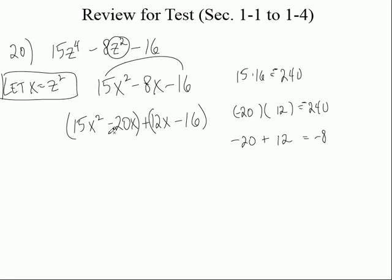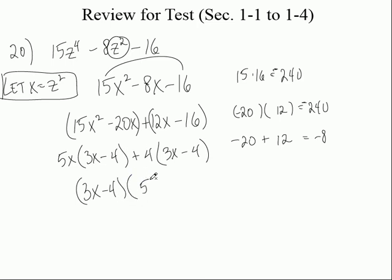Now let's factor this. What goes into both of those? It's 5x, and then we get what? 3x minus 4, right? Plus. In fact, what goes into both of these? 4. Just a 4, right? And then what do we get? 3x minus 4, right? Greatest common factor? 3x minus 4. And then if we factor that out of both of these, what do we get? A 5x plus 4.